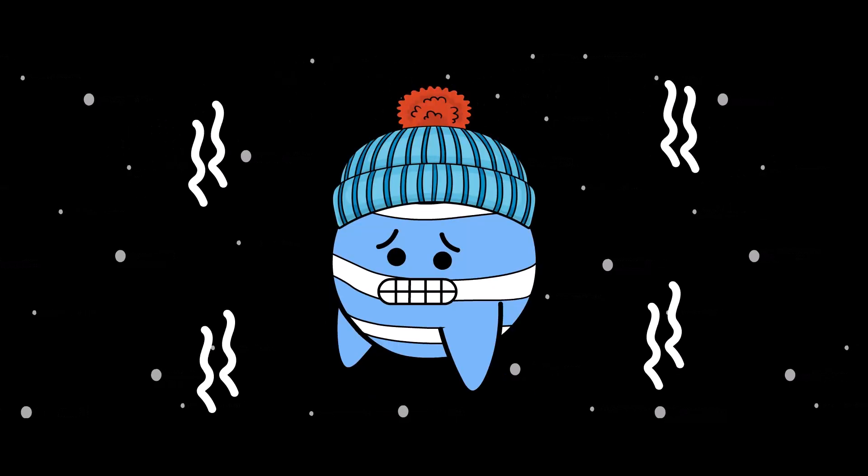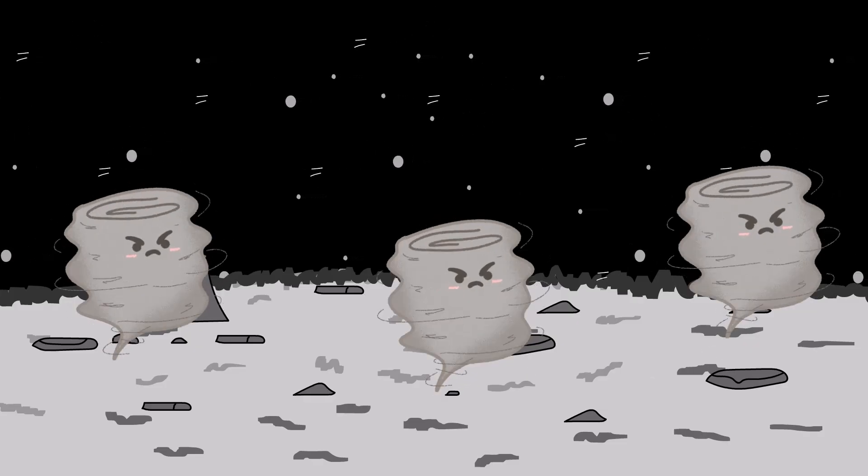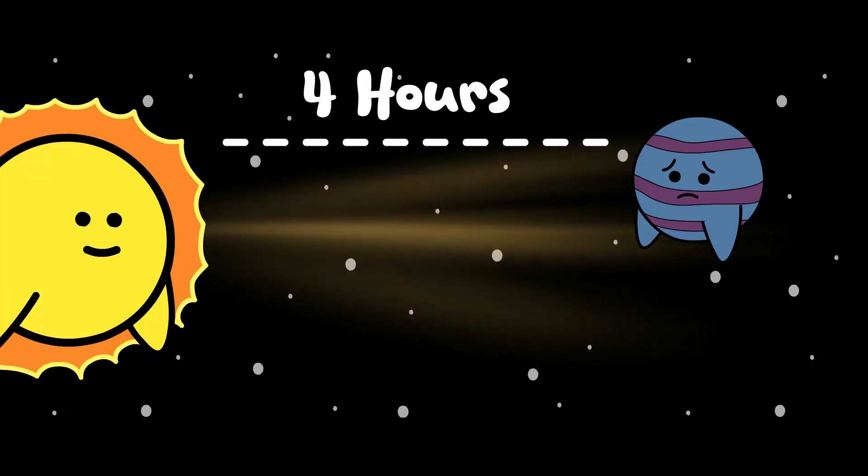Why it sucks to be Neptune. Neptune is the coldest, windiest planet in the solar system, where storms rage for years, winds roar faster than fighter jets, and sunlight takes over four hours just to show up.